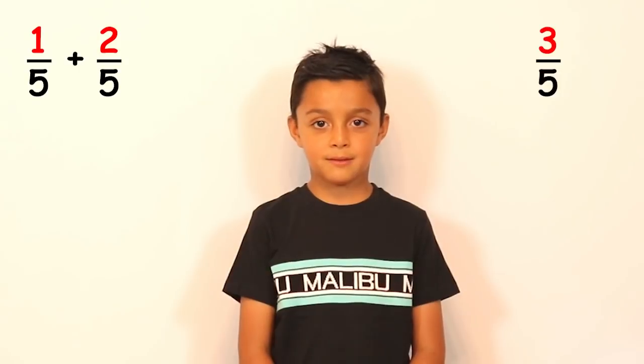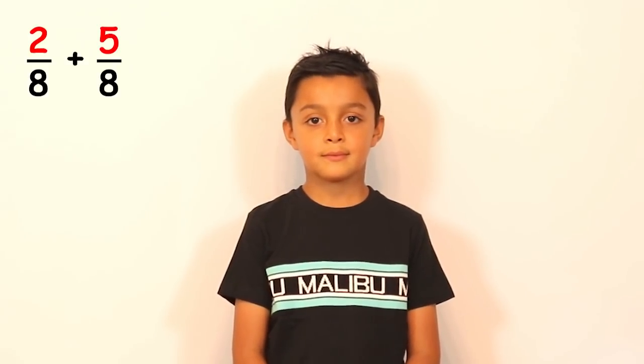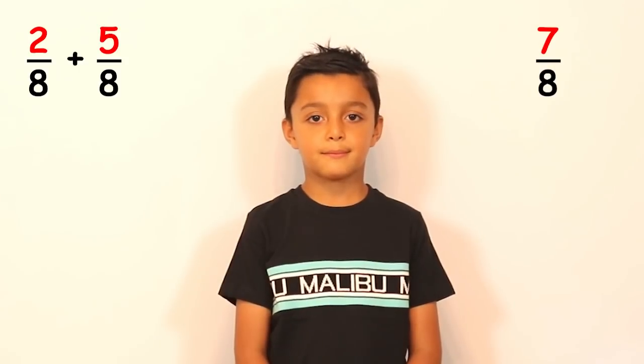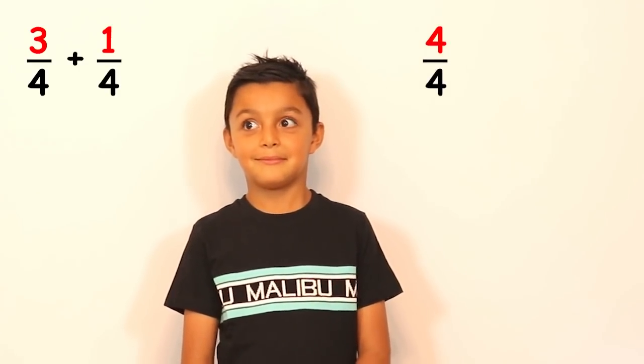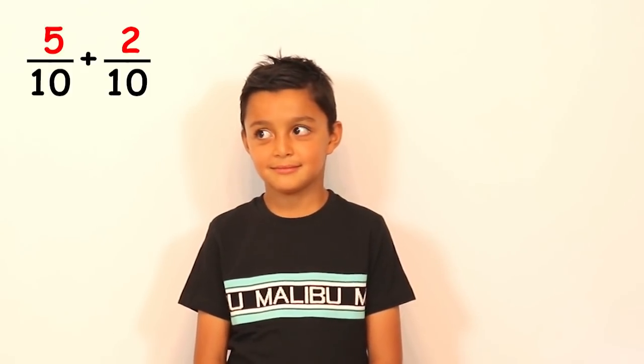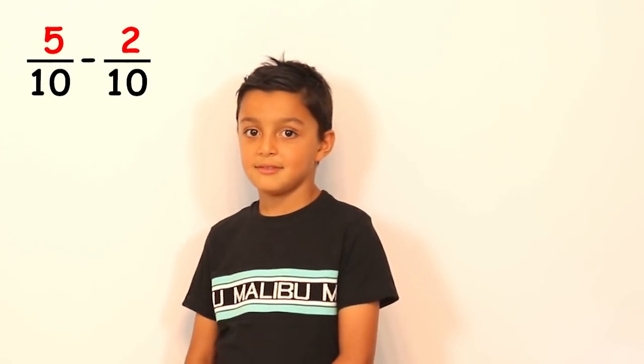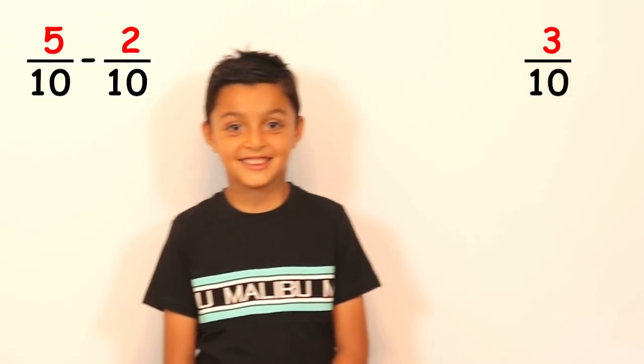Okay Niall are you ready for this quiz? Of course I am. Okay first question. What is one fifth plus two fifths? Three fifths. Brilliant. Two eighths plus five eighths? Seven eighths. Good. What is five tenths take away two tenths? Three tenths.